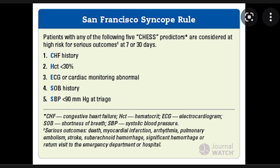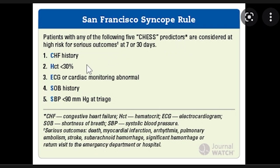The San Francisco syncope rule helps predict whether a patient needs to be admitted. Any patient with one of five predictors should probably be admitted for further monitoring and workup: a history of CHF, hematocrit less than 30, an abnormal EKG, shortness of breath, or a systolic blood pressure less than 90 mmHg.